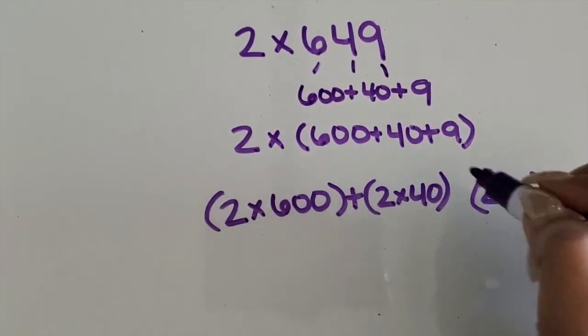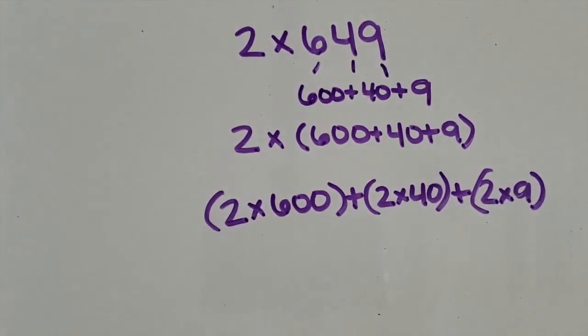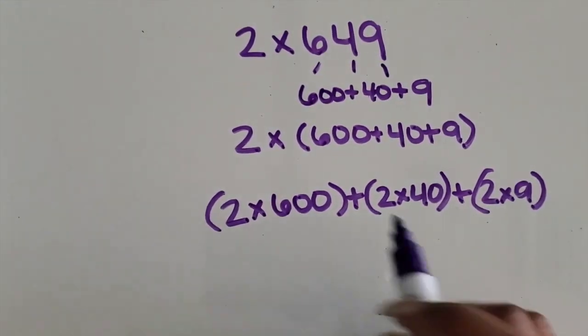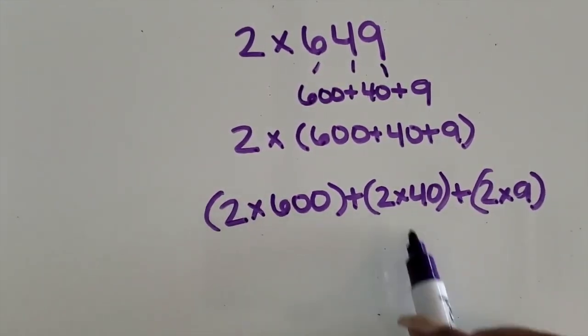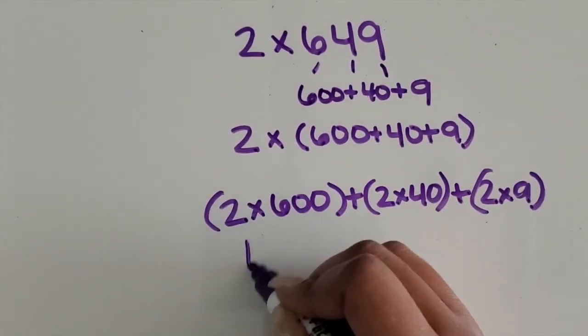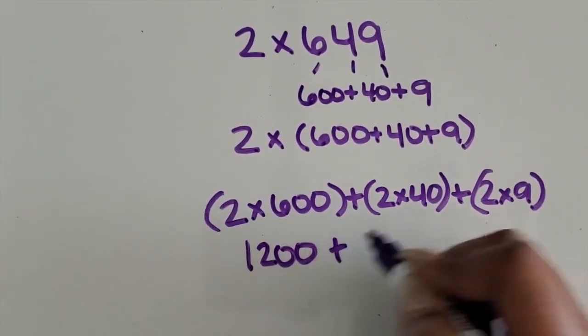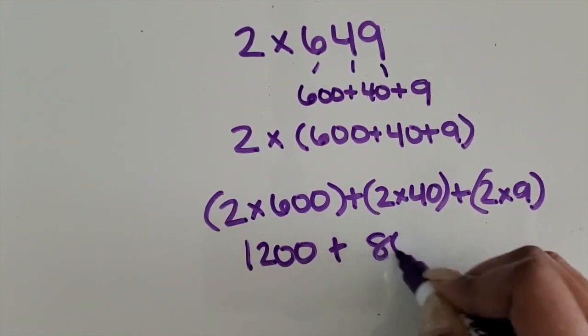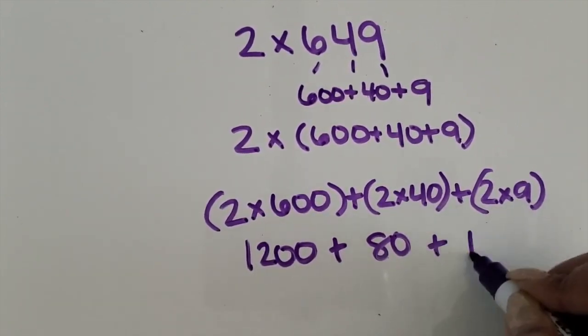You want them to make sure they remember that we're adding them back together, joining them back together, and then find the product of each of those expressions. 2 times 600 is 1,200. 2 times 40 is 80. 2 times 9 is 18.